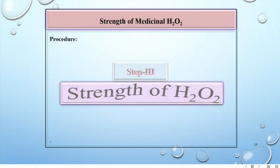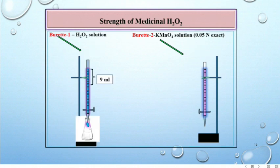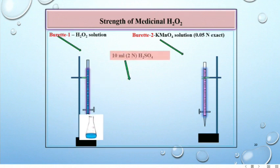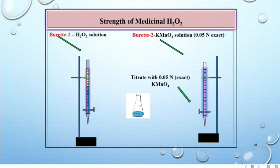Step 3 is for the determination of strength of H2O2. For that, fill the burette number 1 with H2O2 solution and burette number 2 with permanganate solution. Then take 9 ml H2O2 solution in a conical flask. To this solution, add 10 ml two normal H2SO4 solution. Do not heat the solution.